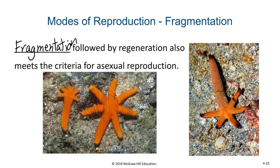Sea stars are actually voracious predators in their environment — they eat many different forms of clams, oysters, and different bivalves. This reminds me of a story from the east coast of the United States. There were some oyster farmers trying to grow oysters in their enclosures, and sea stars were a predator. So the oyster farmers would go out there, and every time they found a sea star, they would cut it in half and throw both halves back in the water, thinking they were eliminating predation. But little did they realize they were actually doubling the number of predators, because those two halves could regenerate and regrow. That practice ended once they spoke with a marine biologist about the problem.